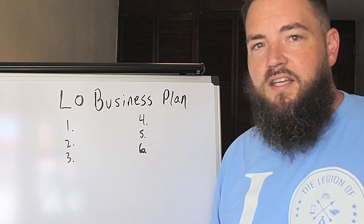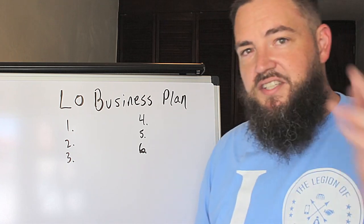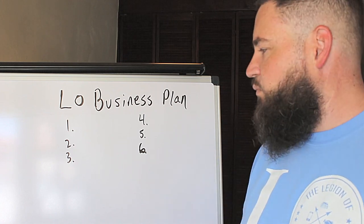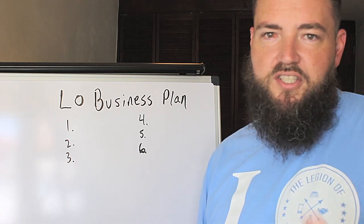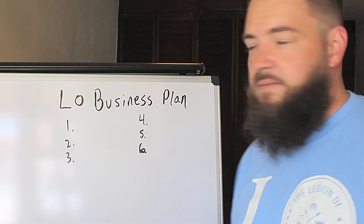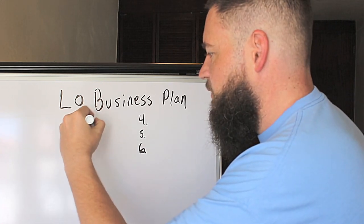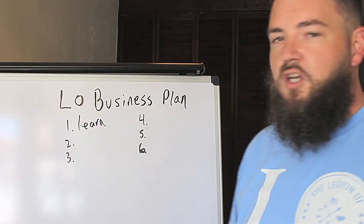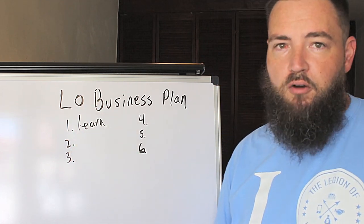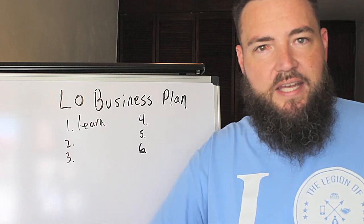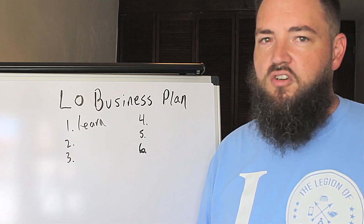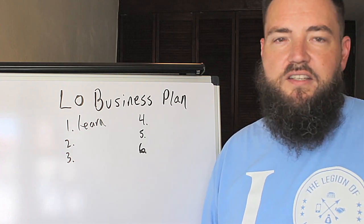Step number one in the six-step loan officer marketing business plan is to learn some new marketing. There are tons of different marketing topics you can learn about — Facebook ads and how to generate first-time home buyer leads, leads for listings, or long-form survey leads.